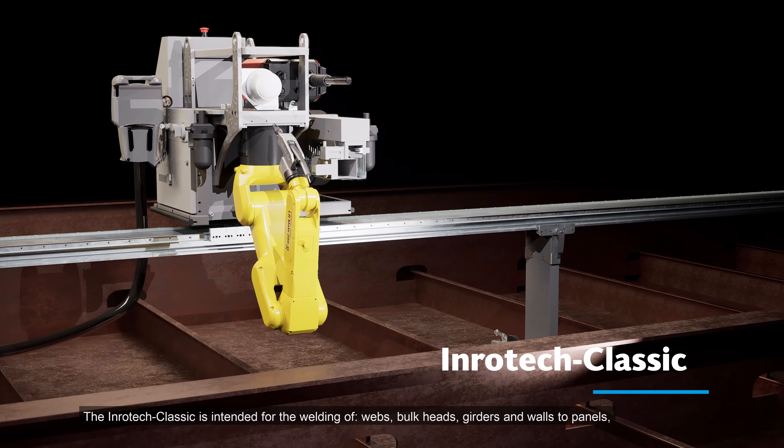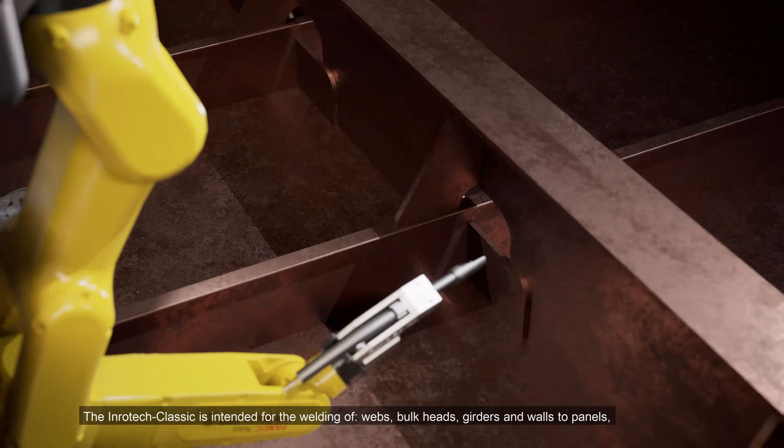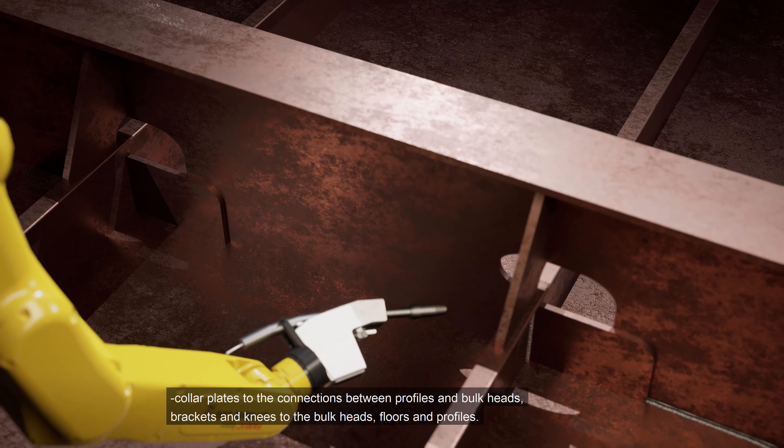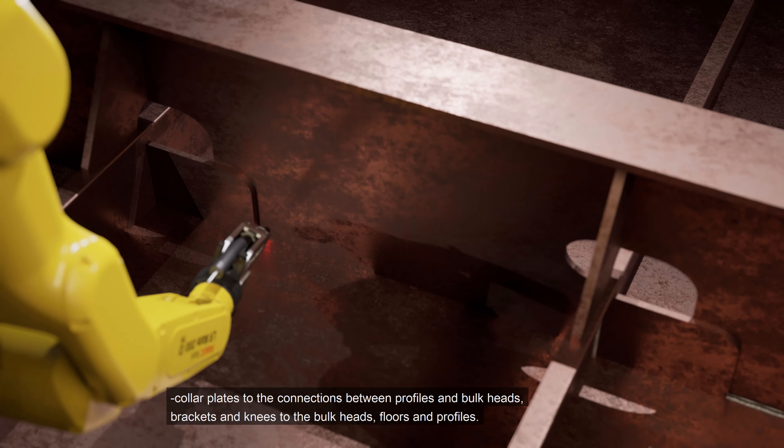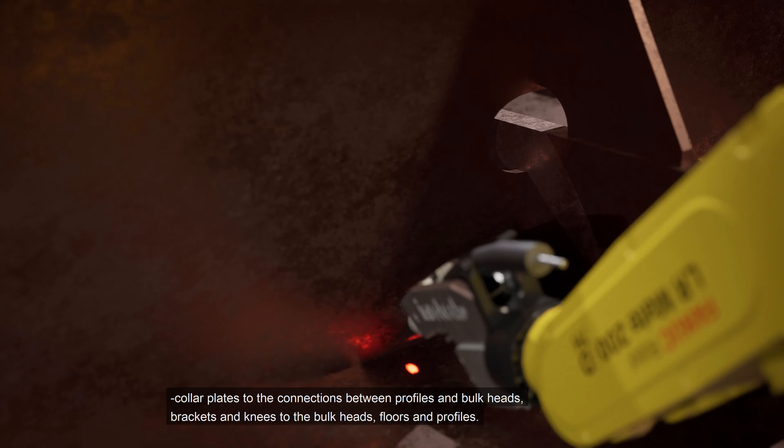The Inrotec Classic is intended for the welding of webs, bulkheads, girders and walls to panels, collar plates to the connections between profiles and bulkheads, brackets and knees to the bulkheads, floors and profiles.